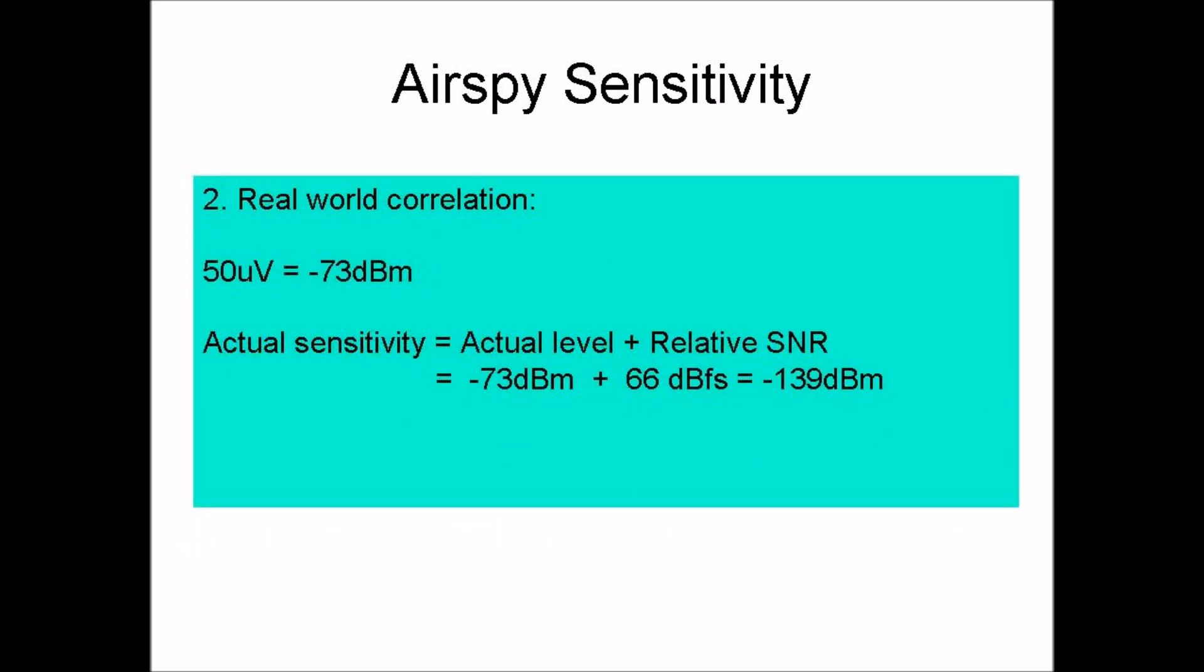We can now correlate these relative measurements back to the actual values in the real world. Remember that the signal generator was putting out 50 microvolts, which is to say minus 73 dBm. We measured 66 dBFS of signal-to-noise ratio. We can simply add the minus 73 dBm reference to the 66 dB signal-to-noise ratio to determine that the actual value of the noise floor is minus 139 dBm.